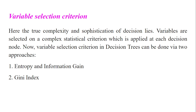Variable selection criteria is where the true complexity and sophistication of the decision tree lies. Variables are selected on complex statistical criteria applied at each decision node. We can do it using two approaches: one is entropy and information gain; the second is the Gini index.